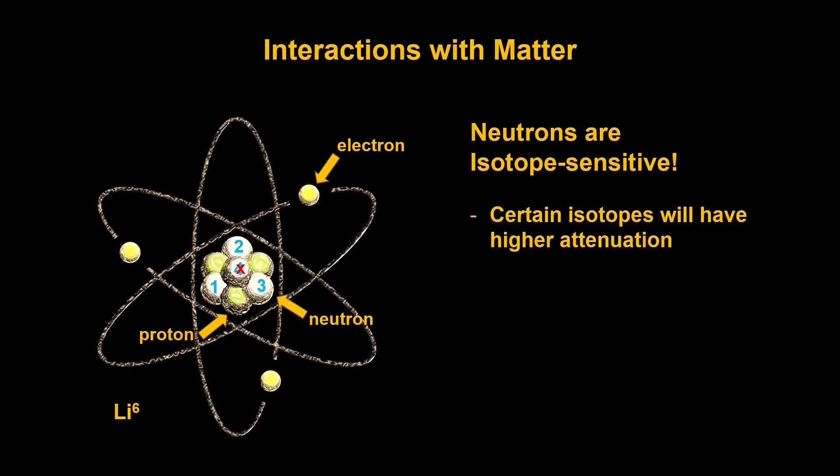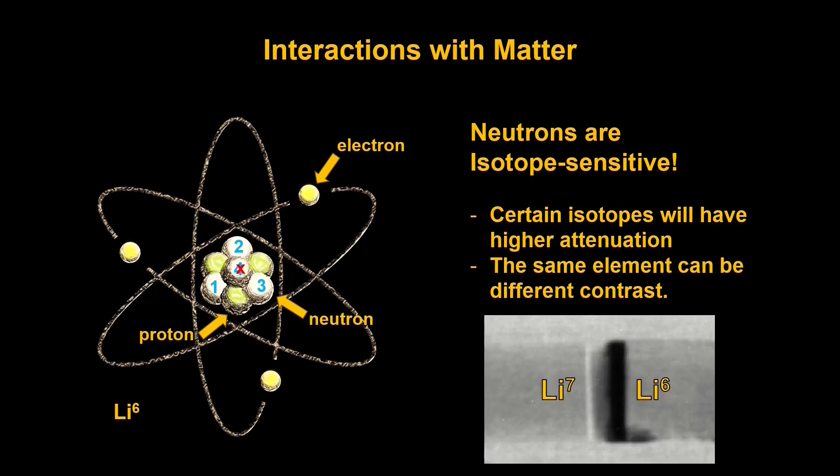And in neutron imaging, certain isotopes will have a higher attenuation. That means that the same element can have different contrasts. And for an example of this from my own work, this is a lithium-lithium solid electrolyte cell consisting of two pieces of lithium separated by a solid electrolyte. One of these lithiums is lithium-7, while the other is lithium-6.